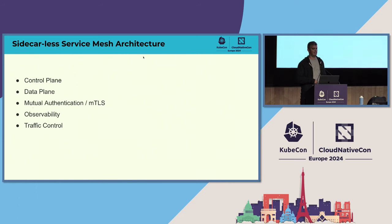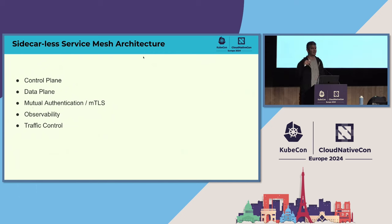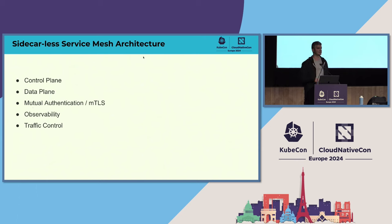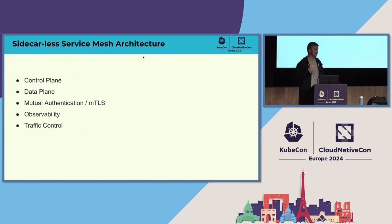The sidecar-less approach and architecture we're looking at today is through the lens of five different areas: control plane, data plane, mutual authentication, observability, and gateway/traffic control. I'll post the slides online and share them through social media and the KubeCon event. We'll definitely cover the control plane, data plane, and mutual authentication. The last two depend on time.